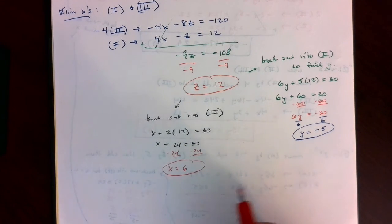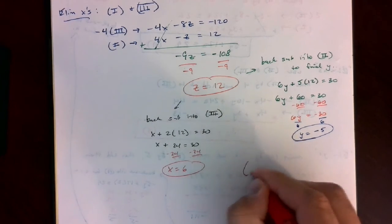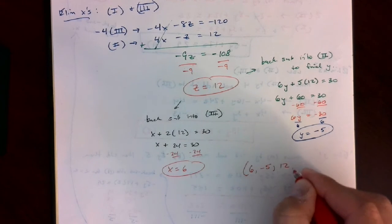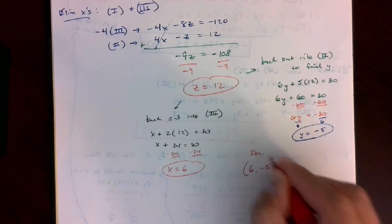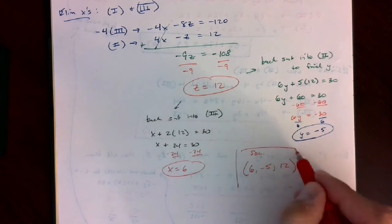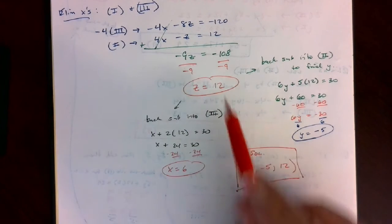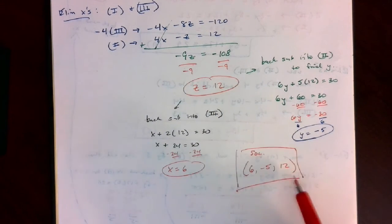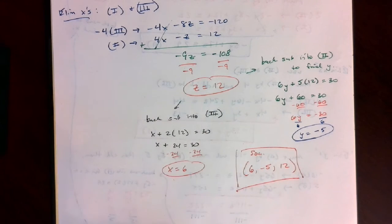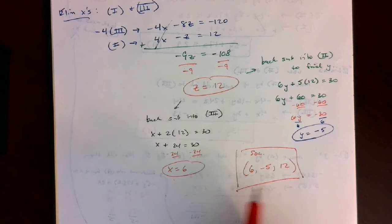So my ordered triple here, x, y, z, to solve the system would be 6, negative 5, 12. The order does matter in an ordered triple. The order is not the order you found them in, it's the list in alphabetical order of the variables. So x, y, and z. We got 6 is x, negative 5 is y, 12 is z. You need to have it in order in the ordered triple.